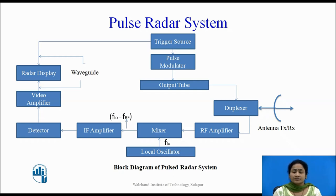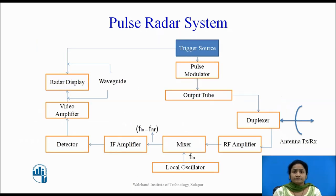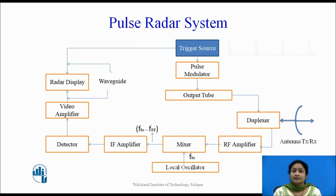This diagram shows the block diagram of the basic pulse radar system. Now let us see one by one what each block consists of and how the working of each block takes place. The first block is the trigger source, whose function is to provide impulse pulses and saw-toothed waveforms to the pulse modulator.